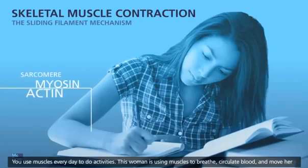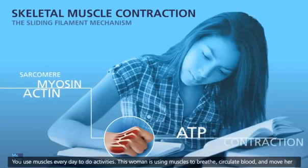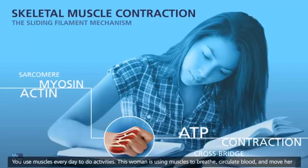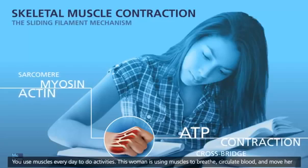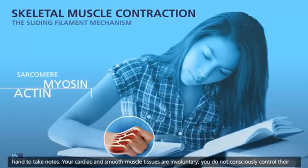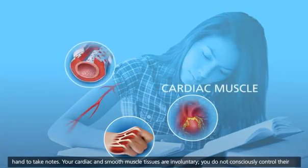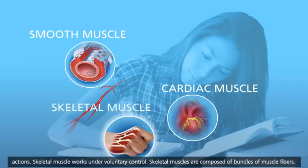You use muscles every day to do activities. This woman is using muscles to breathe, circulate blood, and move her hand to take notes. Your cardiac and smooth muscle tissues are involuntary — you do not consciously control their actions. Skeletal muscle works under voluntary control.